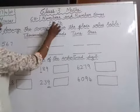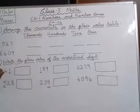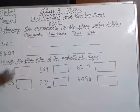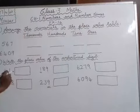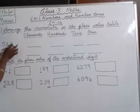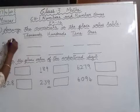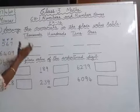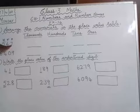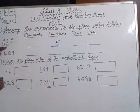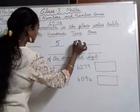Exercise 1.4 — we are going to start this exercise. In the first question, arrange the numerals in the place value table. The first number is 567. We write ones, tens, hundreds. 5 is in hundreds place, 6 is in tens place.